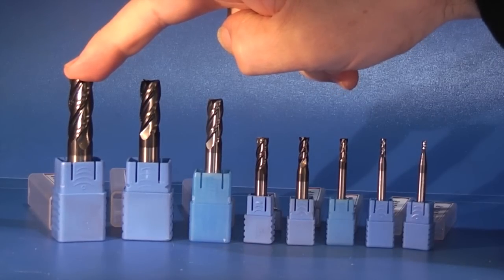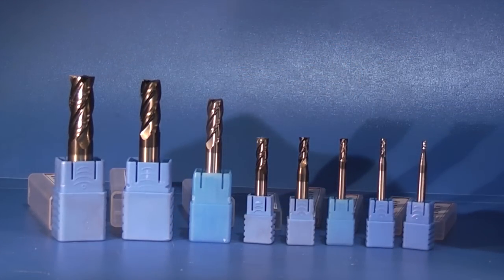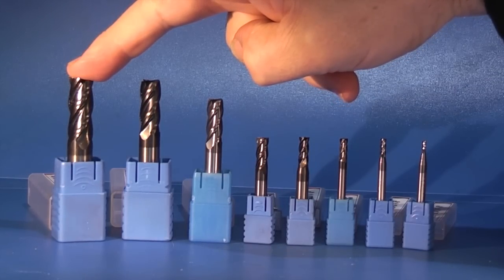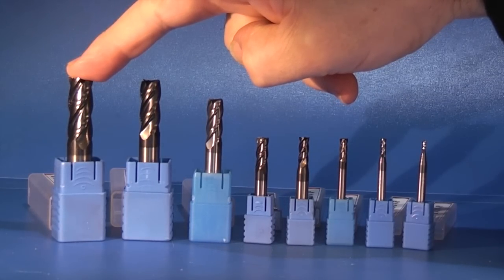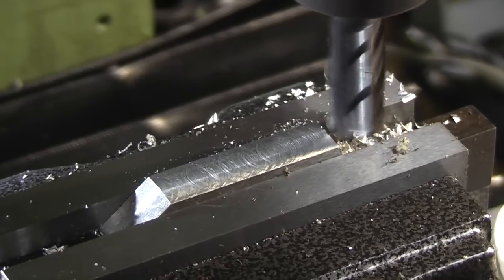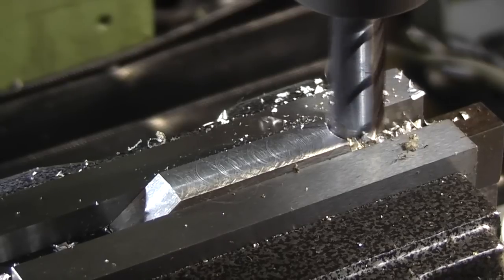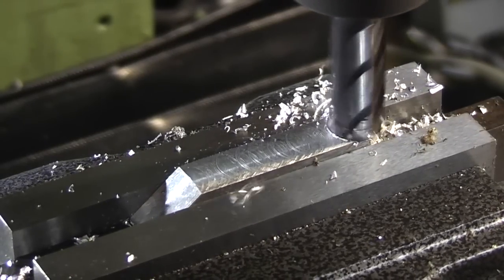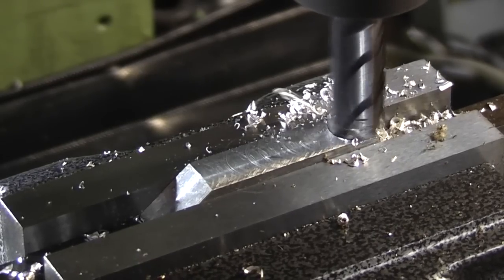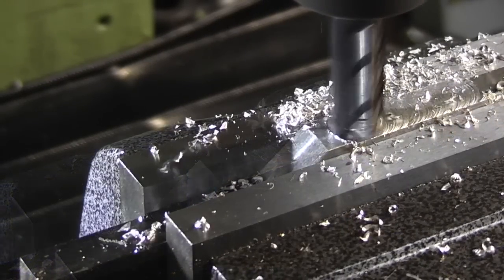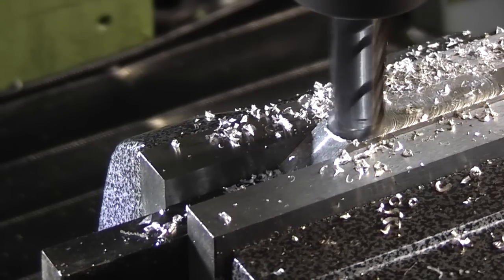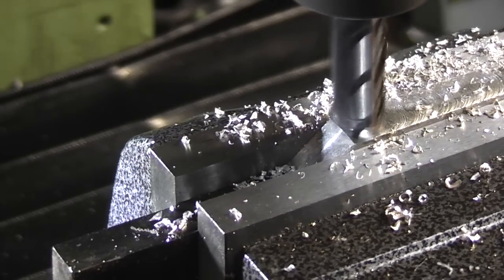So let's take the 12mm end mill, which is a carbide. Use that on the milling machine and cut some metal.